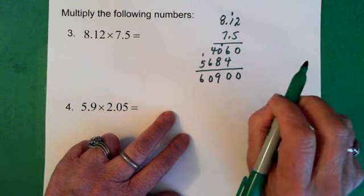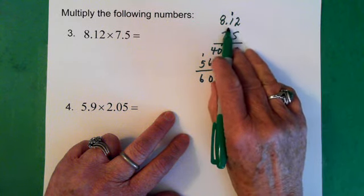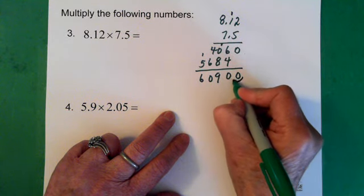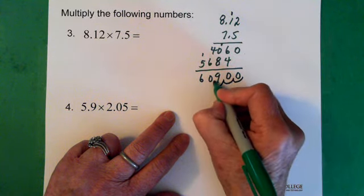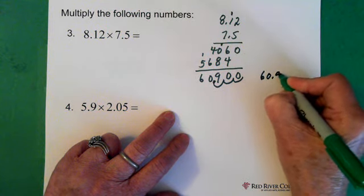Now we go up here and count our decimals. So we see we have 1, 2, 3 decimals. So then we move our decimal place back 1, 2, 3 spaces. And we say our answer is 60.9.